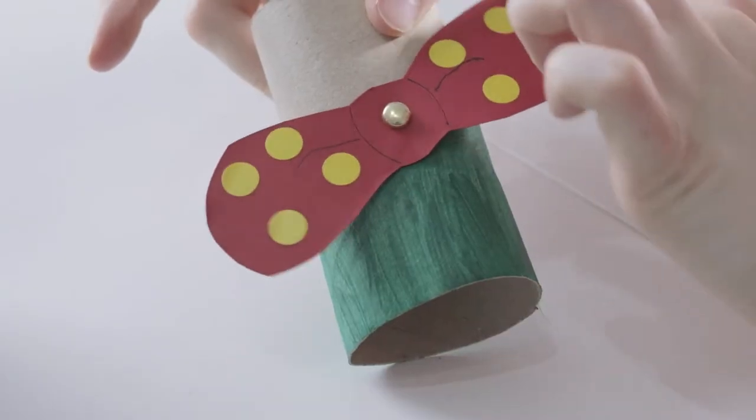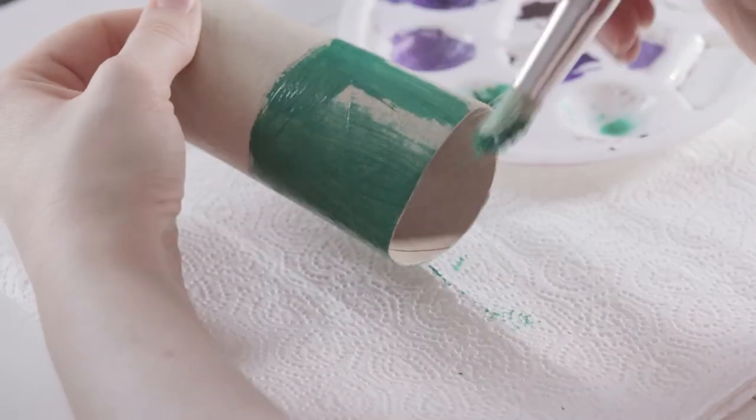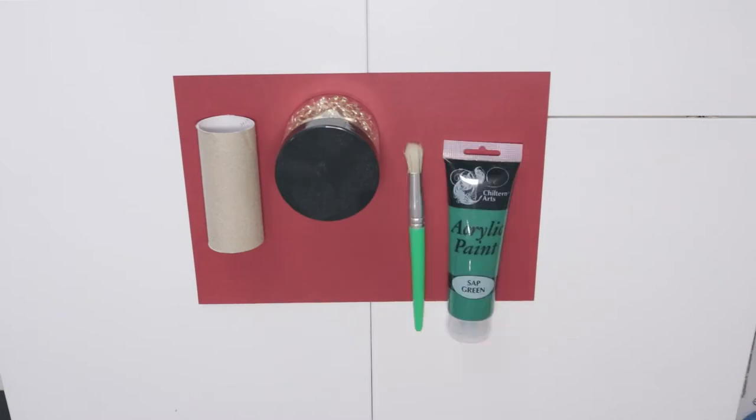This time we're making a cardboard person with a spinning bowtie. All you'll need is some coloured card or paper, an empty toilet roll or kitchen roll tube, safety pins, some coloured paint and a paintbrush, a pen, a pencil and some scissors.